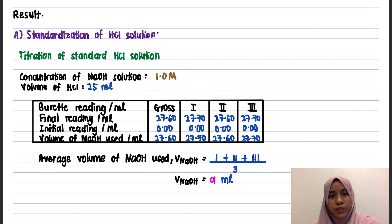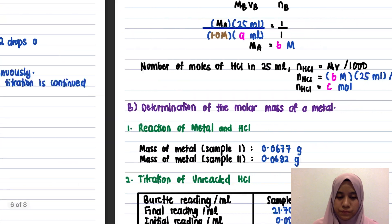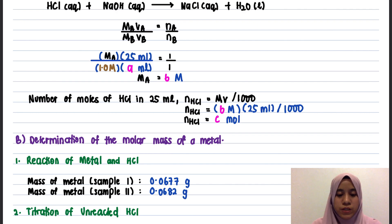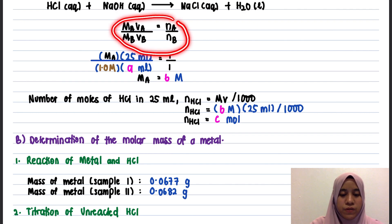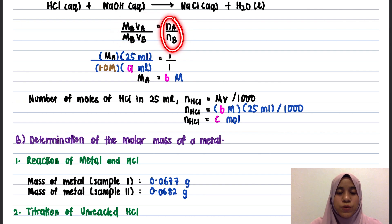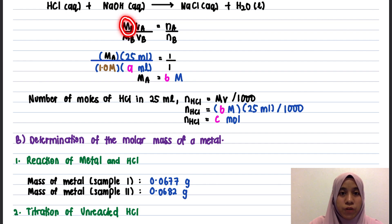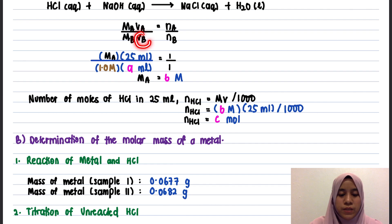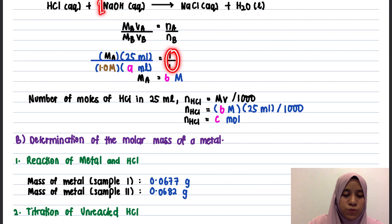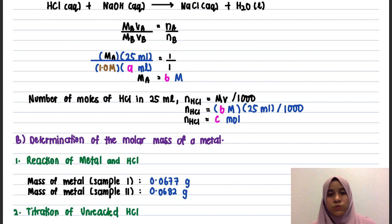To find the concentration of HCl, use the formula: MA·VA / MB·VB = NA / NB, where NA/NB is determined from stoichiometry — write the equation between acid and base. MA is the unknown molarity of acid, VA is 25 ml, MB is 1.0 molar, VB is the average volume calculated previously, and the mole ratio is 1:1. Hence we get the molarity of the acid — our HCl solution is now standardized.